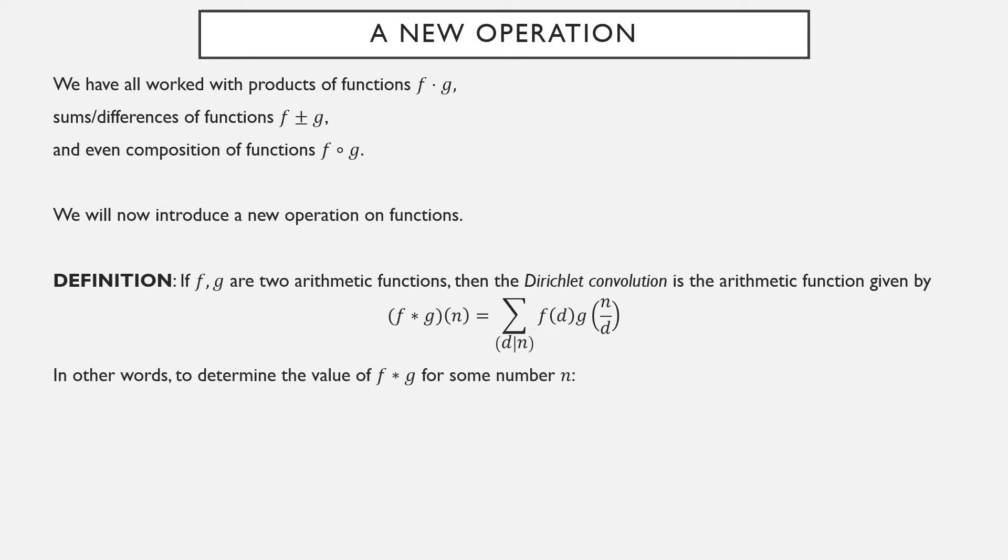So to determine the value of f star g for some number n, first you have to determine all the positive factors of n and their corresponding what I will call a cofactor, d over n. Then you compute the product f of a factor, g of a cofactor, and then sum up all of those products.